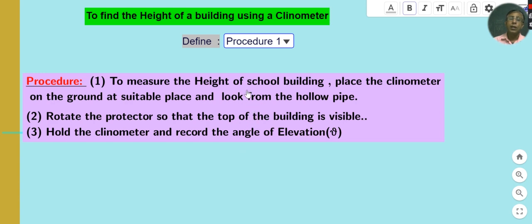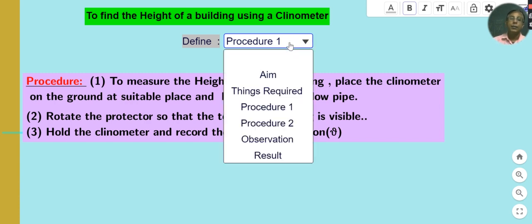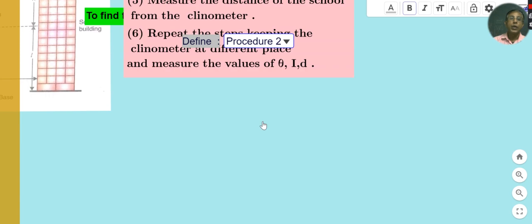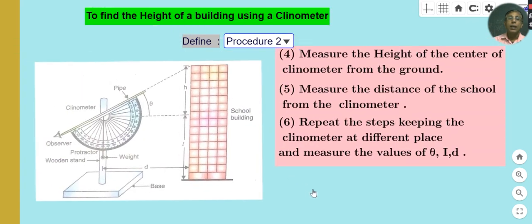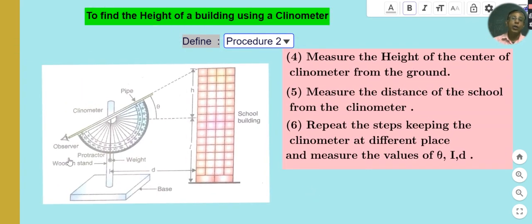Repeat the same procedure for two, three, or up to five observations. Arrange your clinometer in front of the school building and measure the height of the center of the clinometer from the ground.